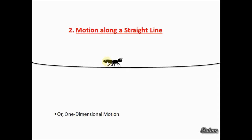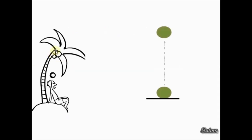Other examples could be a car moving on a straight road, or imagine a coconut falling from a tree — as soon as the coconut leaves the tree it travels in a straight line till it touches the ground. So this is another example of one-dimensional motion.